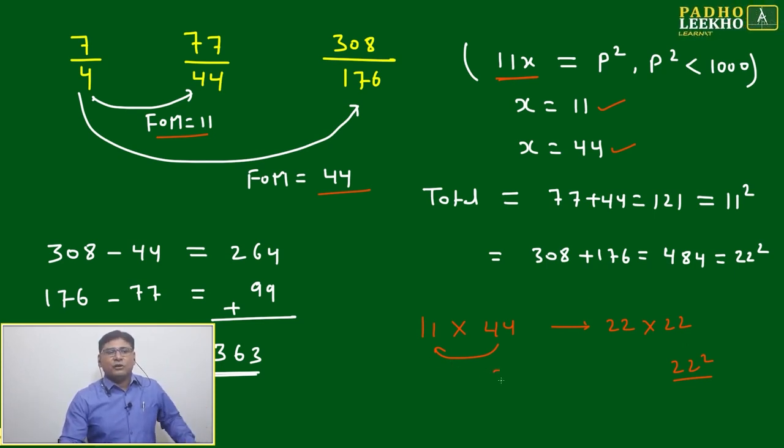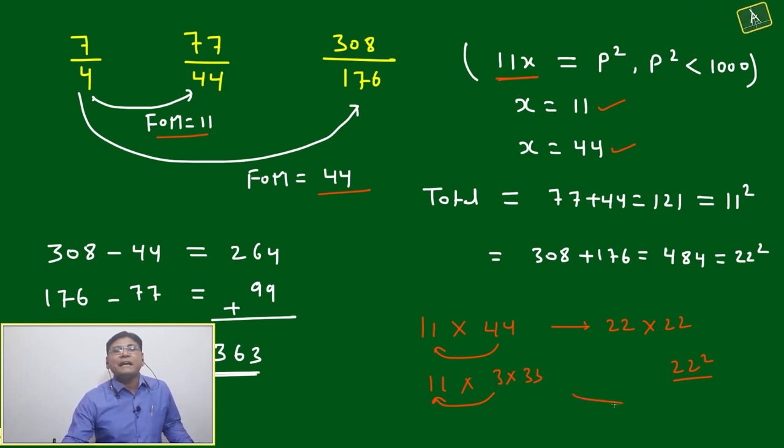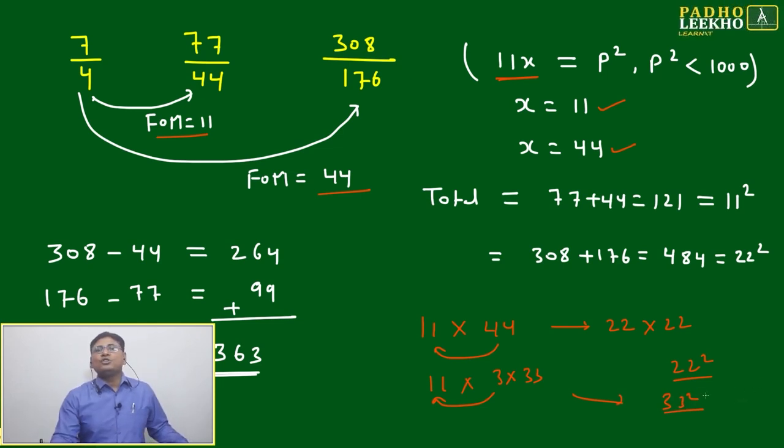If any next choices you will take, like you can take the choice of like 3 into something 11 here, then 3 you will shift this side then it will become 33, then here you have to take 33 means next option will be 99. Next option will be 99, then it will become 33 square. But 33 square we know it will be more than 1000 because 32 square is 1024, 32 square is 2^10, that is 1024, then 33 square must be more than 1000.